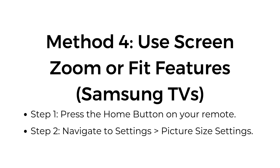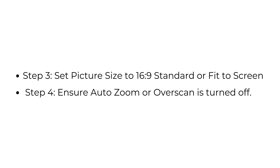Method four: Use screen zoom or fit features — Samsung TVs. Step one, press the home button on your remote. Step two, navigate to settings, then picture size settings. Step three, set picture size to 16:9 standard or fit to screen. Step four, ensure auto zoom or overscan is turned off.